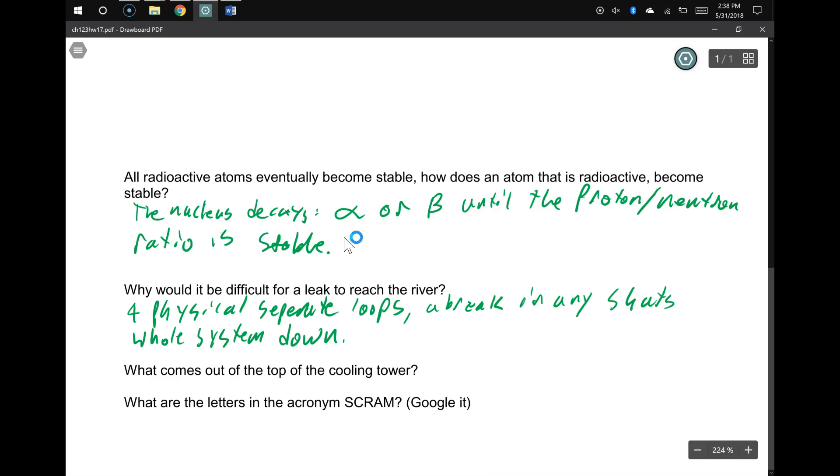A break shuts the whole system down. So if you shut the whole system down, it's really hard to get something from the primary loop into the secondary loop into the condensing loop into the cooling loop with the pumps not pumping any water. It'll leave it confined and leaking into one particular space.